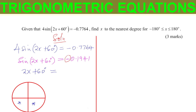When getting the sine inverse to find the acute angle used to calculate these quadrant angles, we use the positive value: sine inverse of 0.1941. This gives us 11.19 degrees, which is the acute angle we'll use to obtain the required angles in those quadrants.